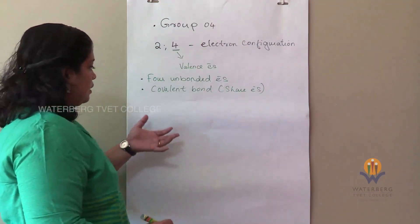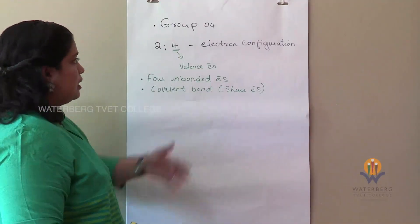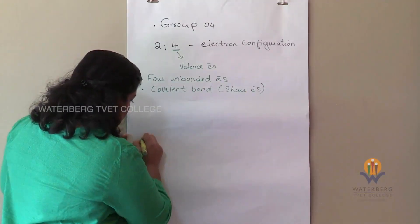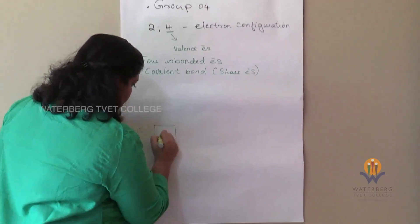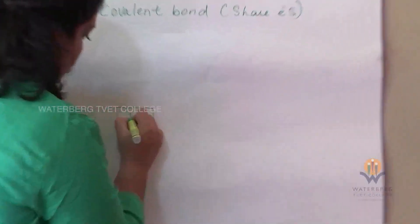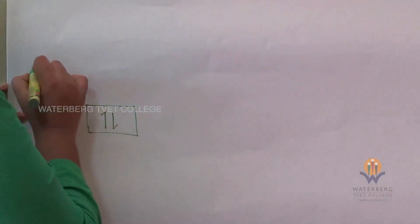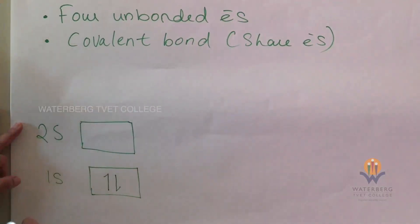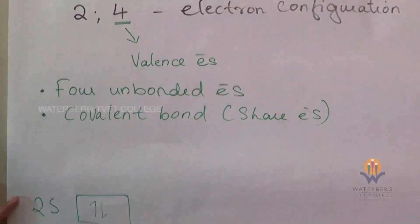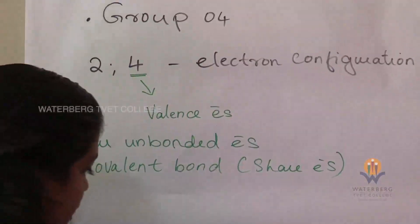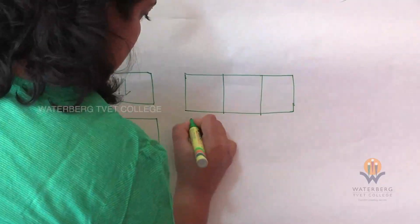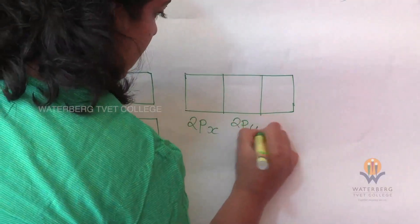Now let us look at the half-bar diagram of this carbon atom. The first orbital is the 1s orbital, which can occupy 2 electrons. The second one is 2s, and the s orbital can take a maximum of 2 electrons again. We are left with another 2, which go into our 2p orbital. The 2p orbital is divided into 2px, 2py, and 2pz.